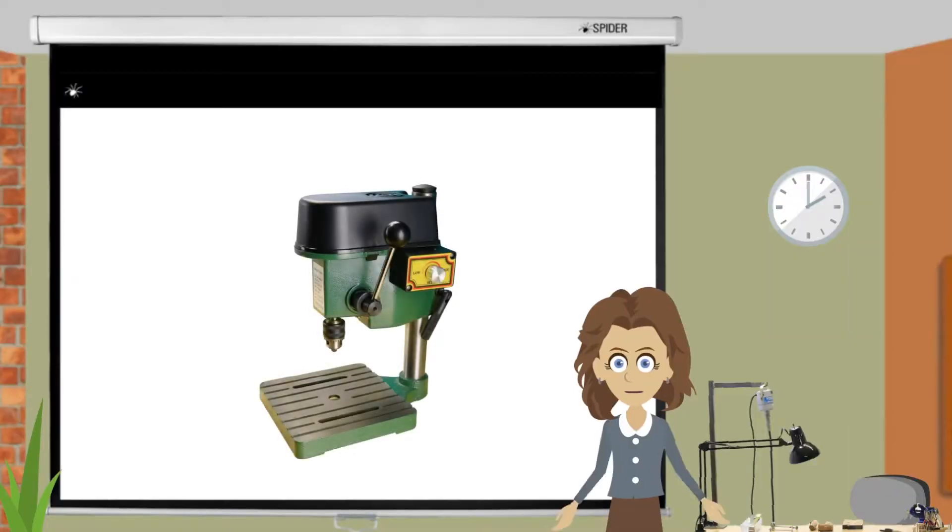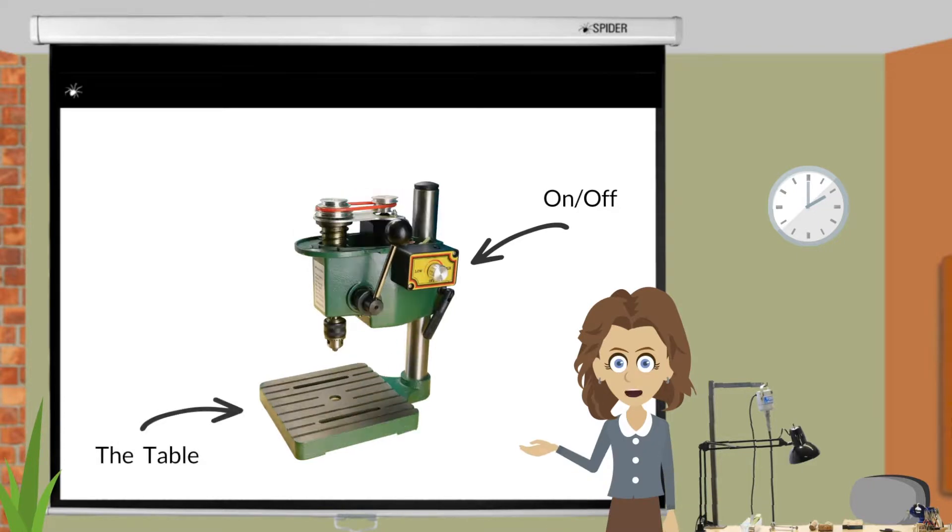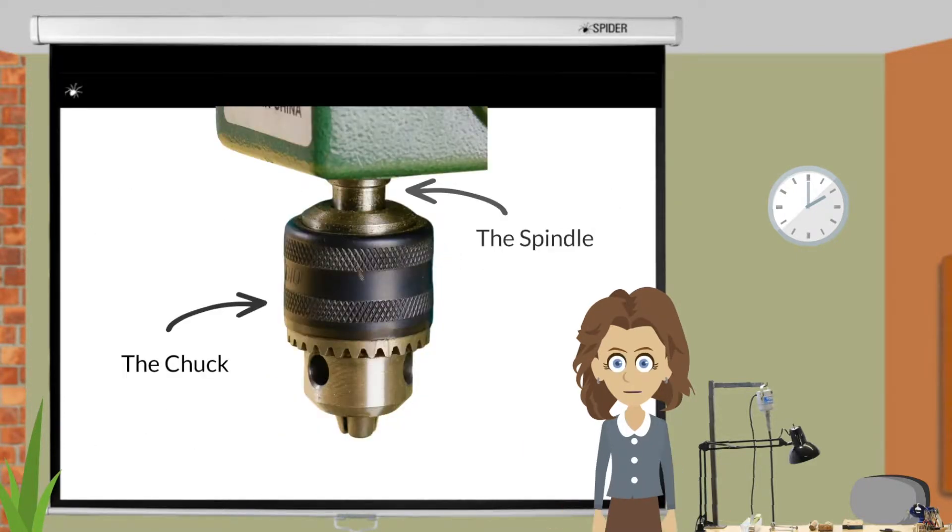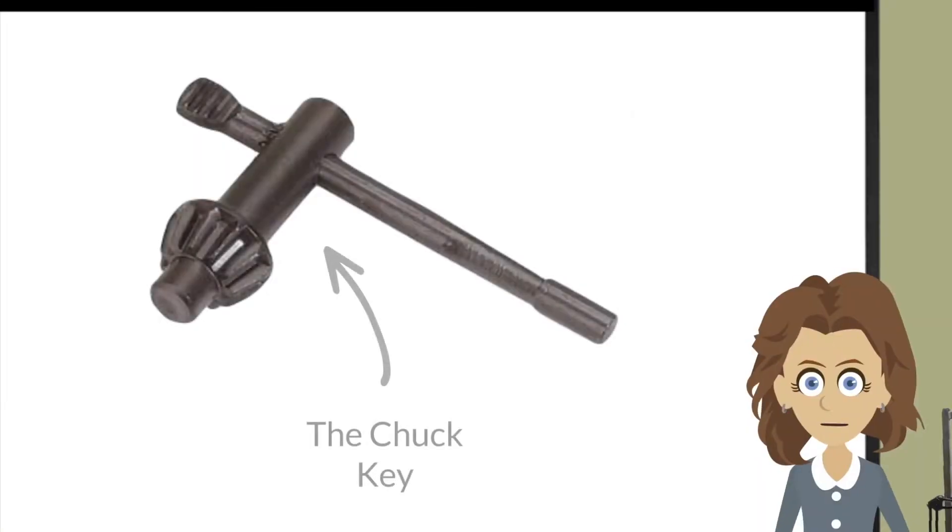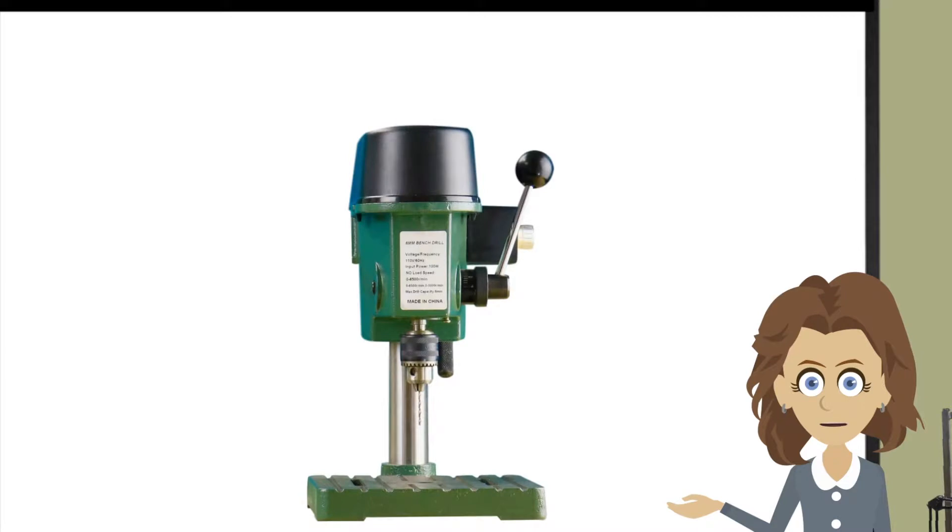Drill presses have six core parts: the on and off switch, the table, the motor and spindle pulleys, the chuck, the spindle, and the chuck key. Some presses will have more adjustment knobs, bits, bobs, and pieces, but all will have the core six parts.